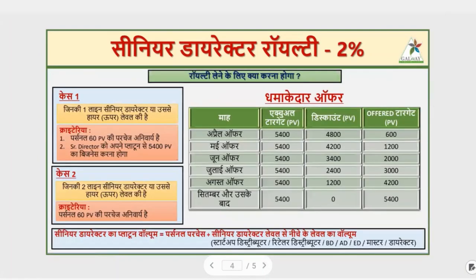Now, what do you have to do to qualify for Senior Director Royalty? The first requirement is that you should purchase 60 PV personally. The second requirement is that the Senior Director will have to do a business of 500 PV. And additionally, the Senior Director will have to maintain a personal 60 PV.